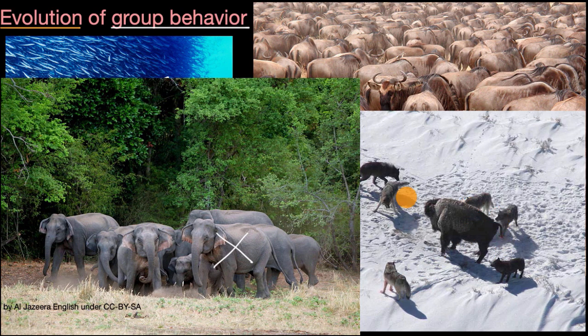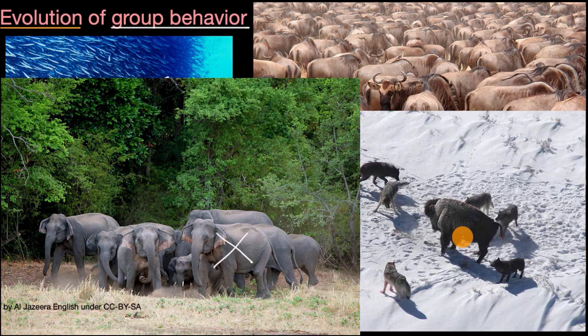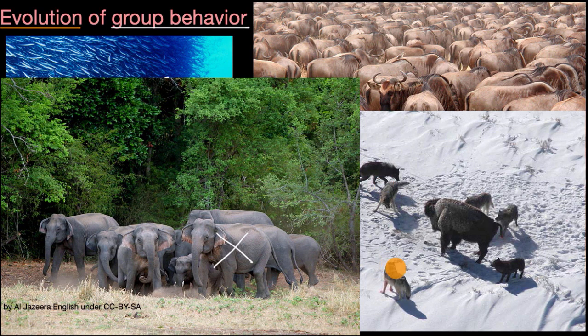And these wolves, which are much, much smaller individually than this bison, have a decent chance of taking it down. So once again, this group behavior of these wolves to not hunt by themselves, but to hunt together, to surround animals, to coordinate with each other, that allows them to prey on animals much, much larger than themselves.